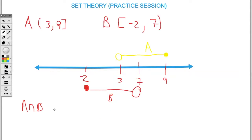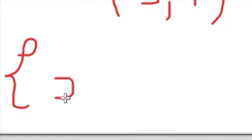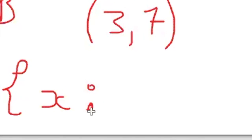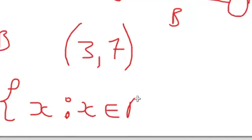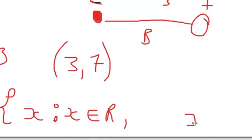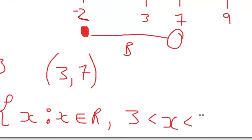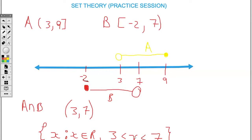Suppose I ask for A intersect B. For A intersect B I look at the overlapping region — that is where they intersect. As interval notation, the interval is (3, 7), open at 3 and open at 7. As a set builder: { x | x ∈ ℝ, 3 < x < 7 }. The reason we use strictly greater than and strictly less than is due to those curved brackets.